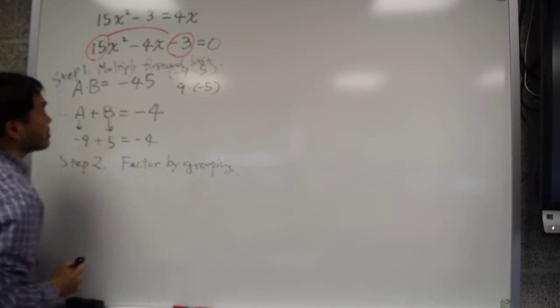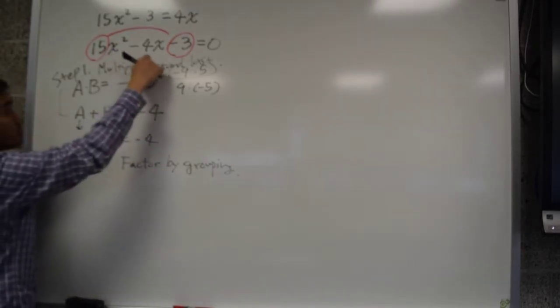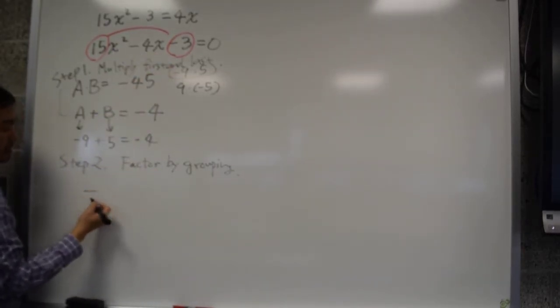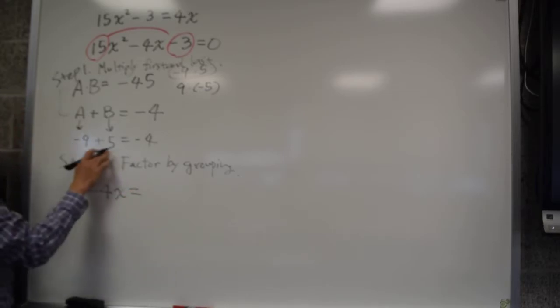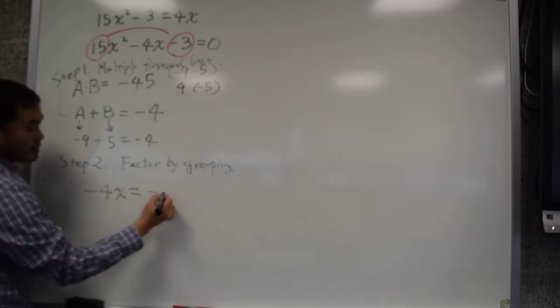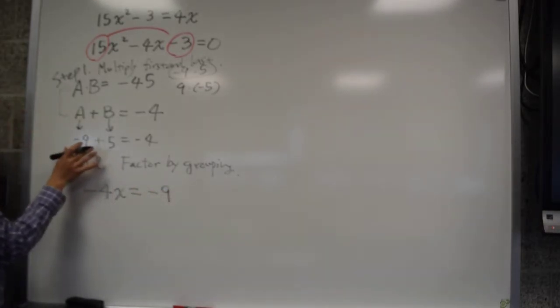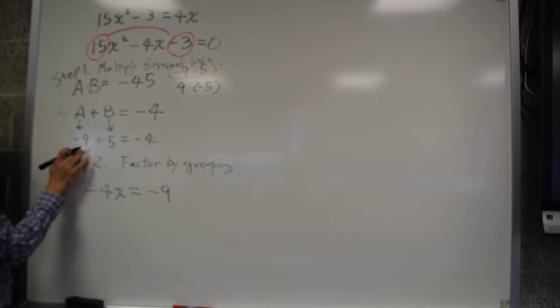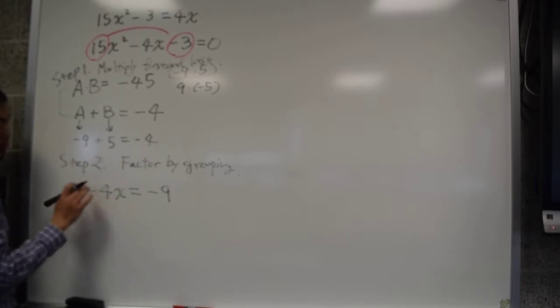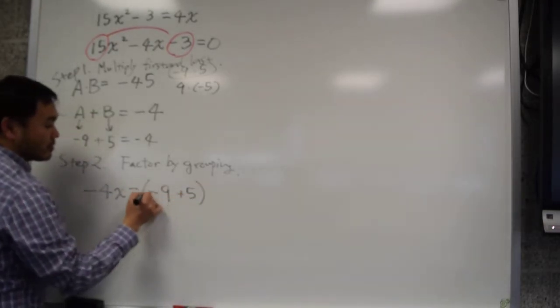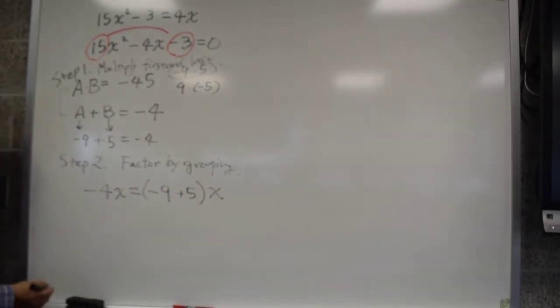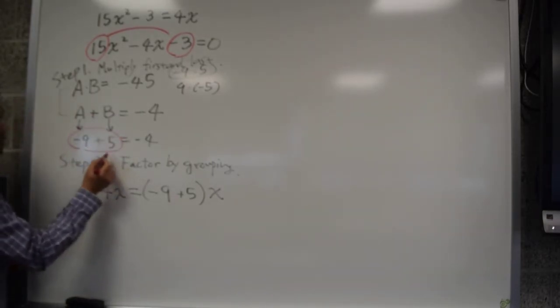And what I mean by that is you see this negative 4x. You take the negative 4x, the middle term, and rewrite negative 4 as negative 9 plus 5. That's why we did this work. We made negative 4 into negative 9 plus 5 so that we can apply it here. So I replace negative 4 by negative 9 plus 5 times x.